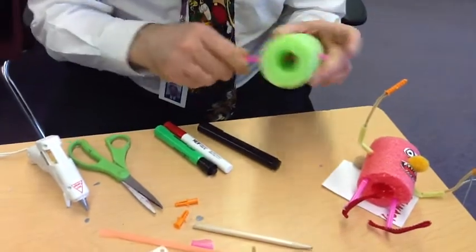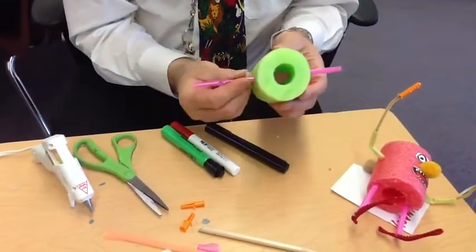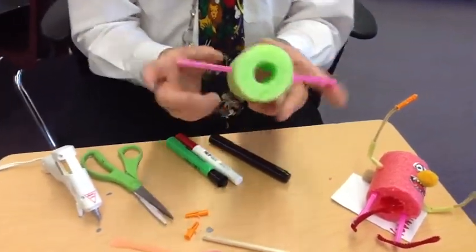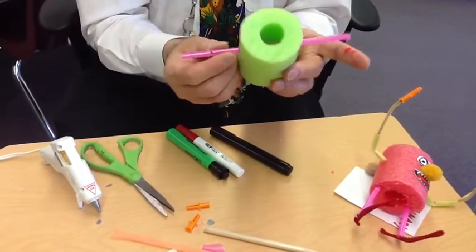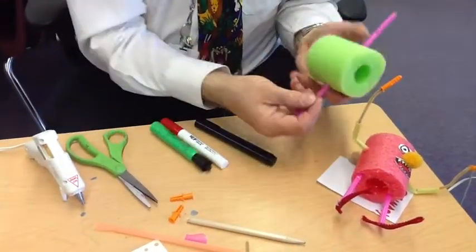You just push it through. Now it's a little bit hard aligning it perfectly, but try to get about halfway through each side. Now this is an arm sticking straight out. We'll probably want to have elbows.